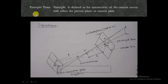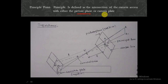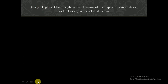Principal point: it is defined as the intersection of the camera axis with either the picture plane or the camera plate. You can see here it is the intersection of the camera axis and the picture plane — that point is called the principal point.